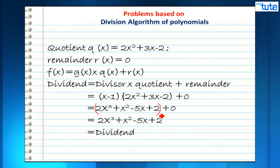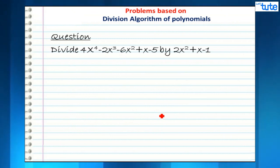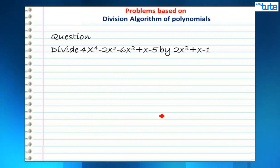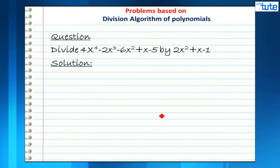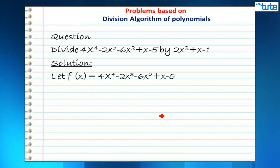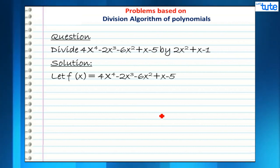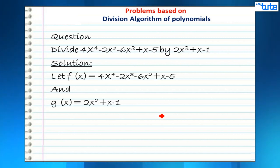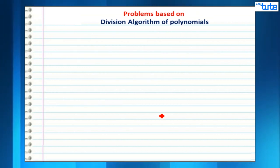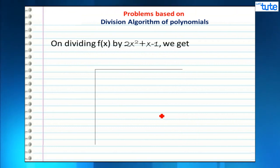Let's move on to the next question: divide 4x⁴ - 2x³ - 6x² + x - 5 by 2x² + x - 1. Let f(x) = 4x⁴ - 2x³ - 6x² + x - 5 and g(x) = 2x² + x - 1. We write the dividend and divisor in position for long division.